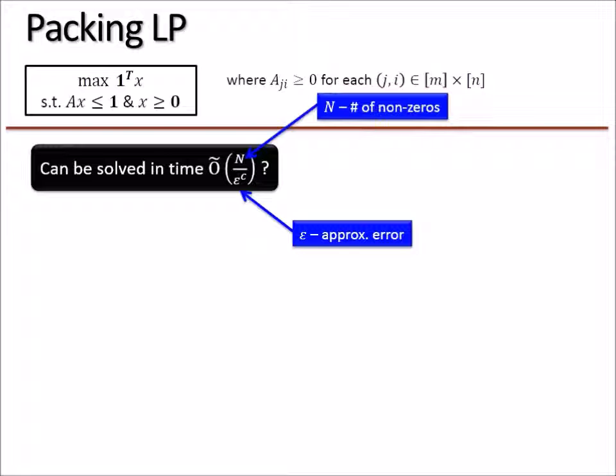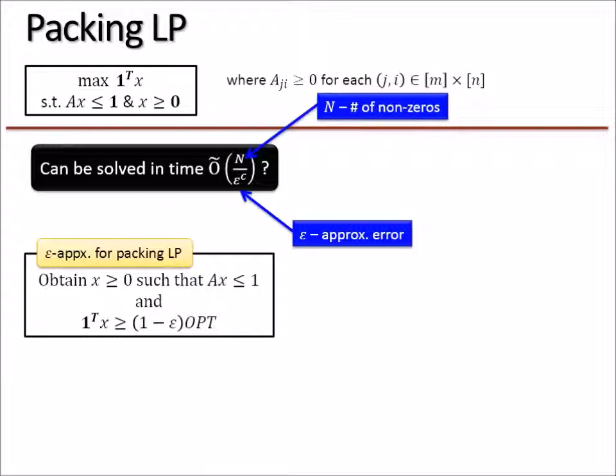Here epsilon is the most natural thing one can define. We say we get an epsilon approximation to packing LP if we get a vector that's feasible, satisfies the polytope constraint, and whose objective value is at least (1-epsilon) times the best objective value of this LP.